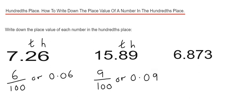Let's have a look at our final example. We've got 6.873. Again, if we count two digits after the decimal point, we've got eight in our tenths, seven in our hundredths. We can write this as seven hundredths or 0.07.